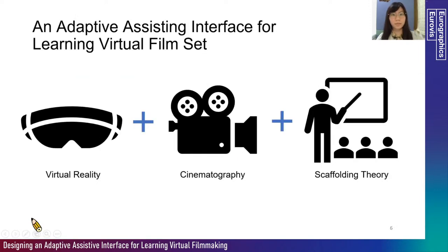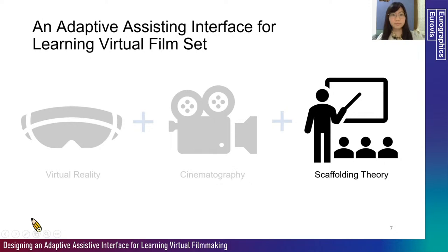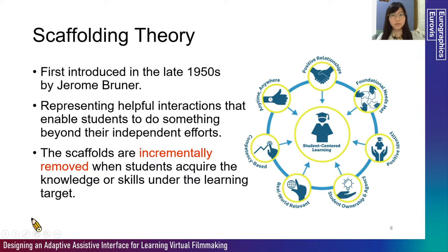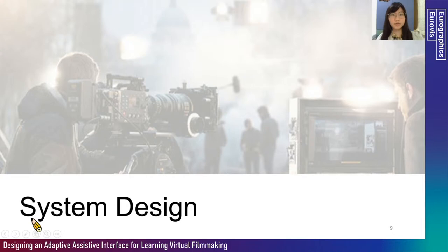Based on this, we design an adaptive assisting interface for learning virtual film set, which integrates virtual reality, cinematography, and scaffolding theory. Scaffolding theory was first introduced in the late 1950s by Jerome Bruner, a cognitive psychologist. Scaffolding represents helpful interactions that enable students to do something beyond their independent efforts. This support is specifically tailored to each student, with scaffolds incrementally removed when students acquire the knowledge or skills under the learning target. This instructional approach allows students to experience student-centered learning, which tends to facilitate more efficient learning than teacher-centered learning.